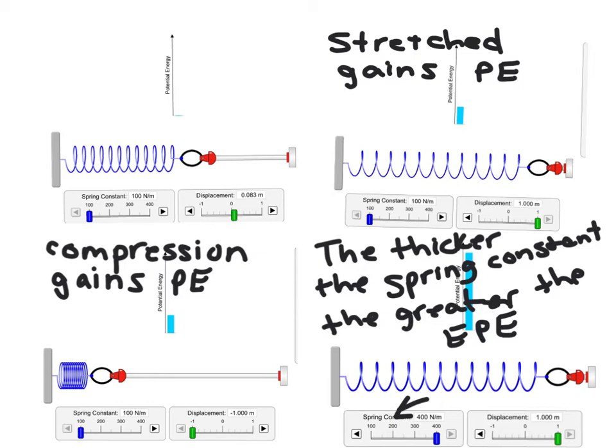The thick rubber band will always have more energy than the thinner rubber band. So the two factors that affect elastic potential energy are how much they are stretched or compressed and the thickness of the object.